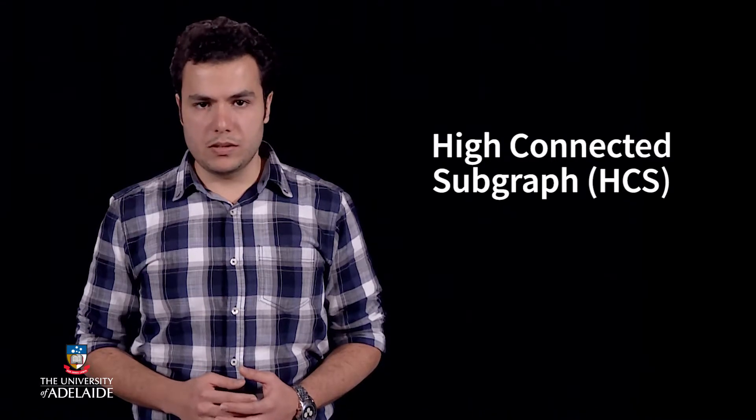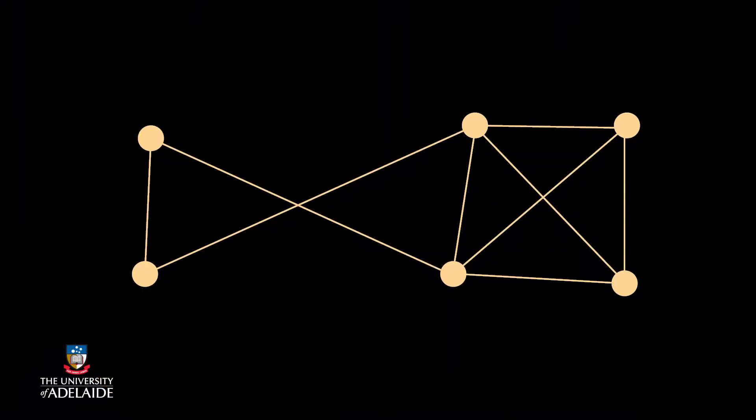Now we can define a high-connected subgraph, or HCS. A subgraph is high-connected if the size of its minimum cut is more than half of the number of its vertices. For example, here we have a graph with six vertices, but its minimum cut has two edges, so it is not an HCS.